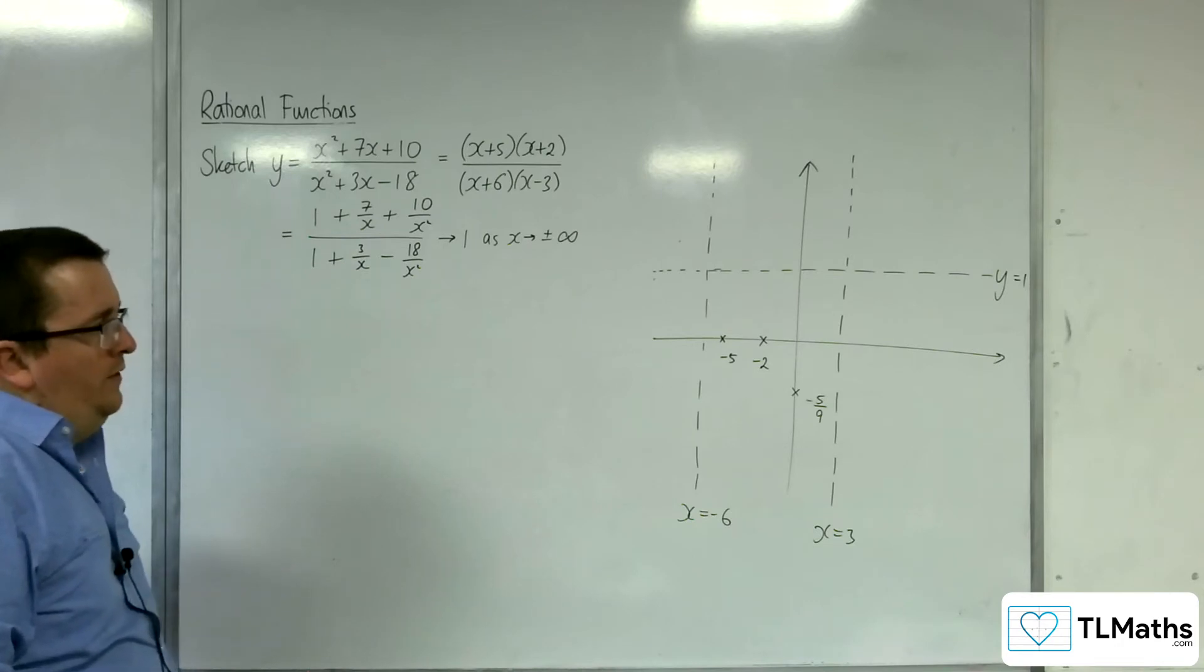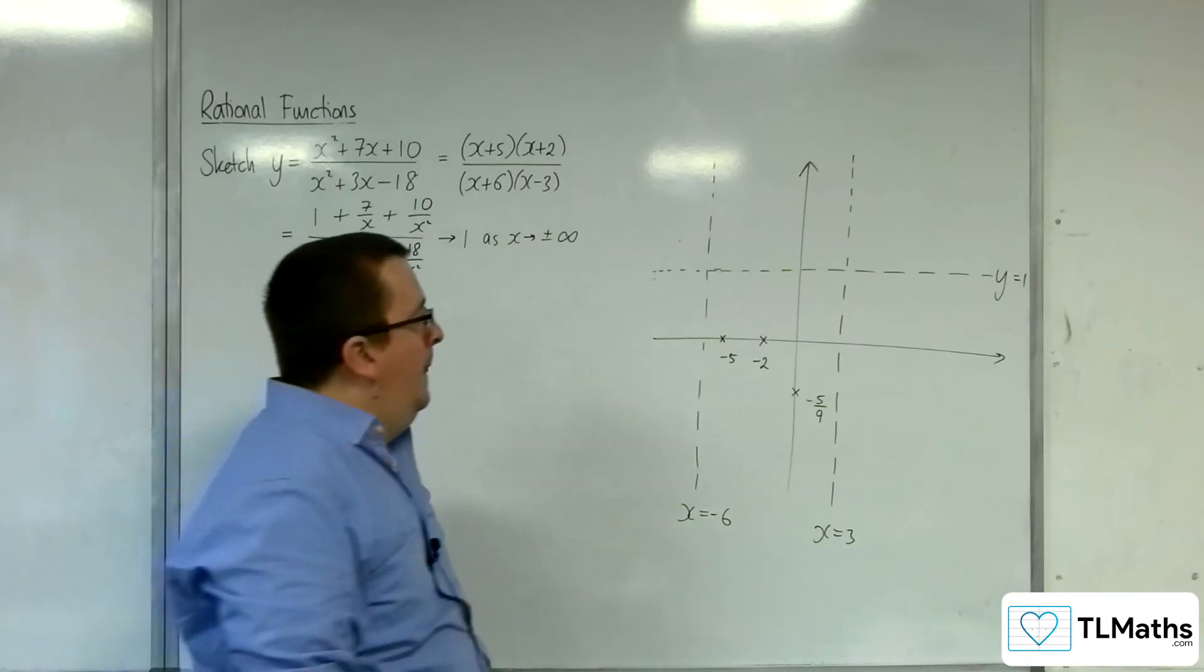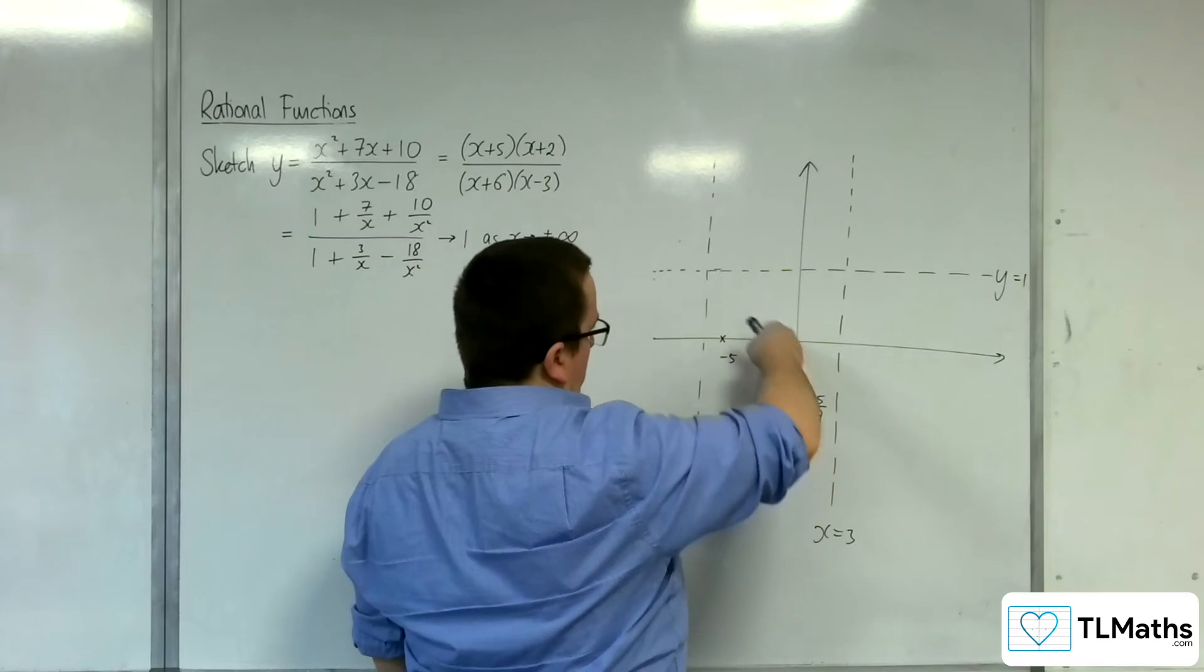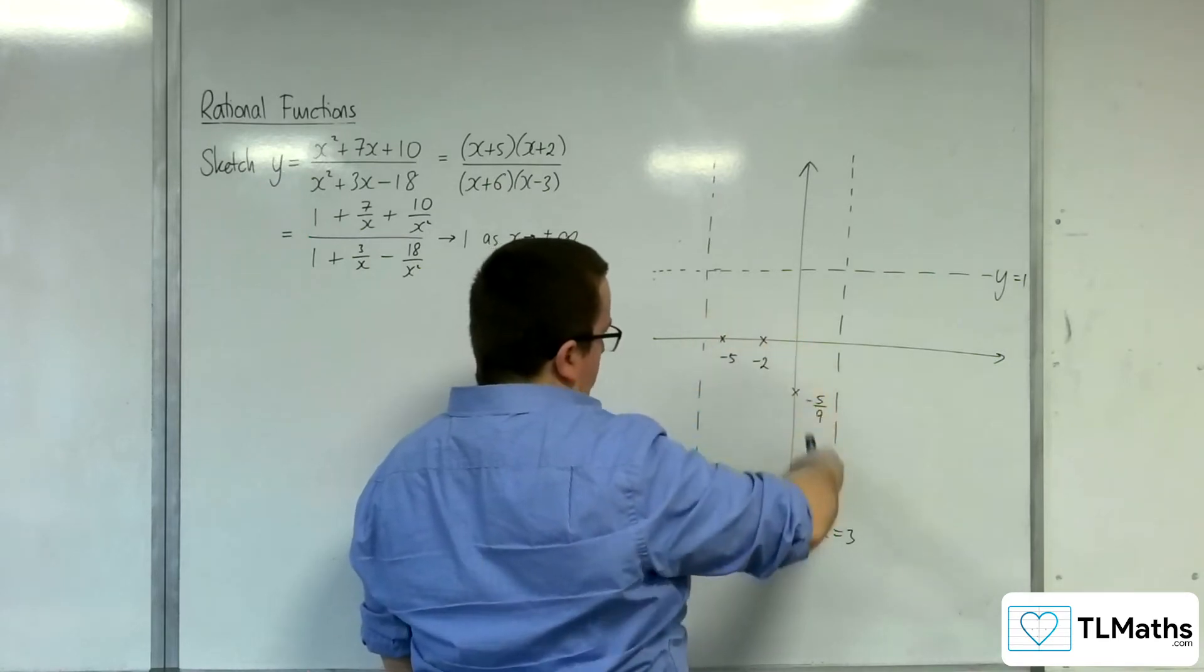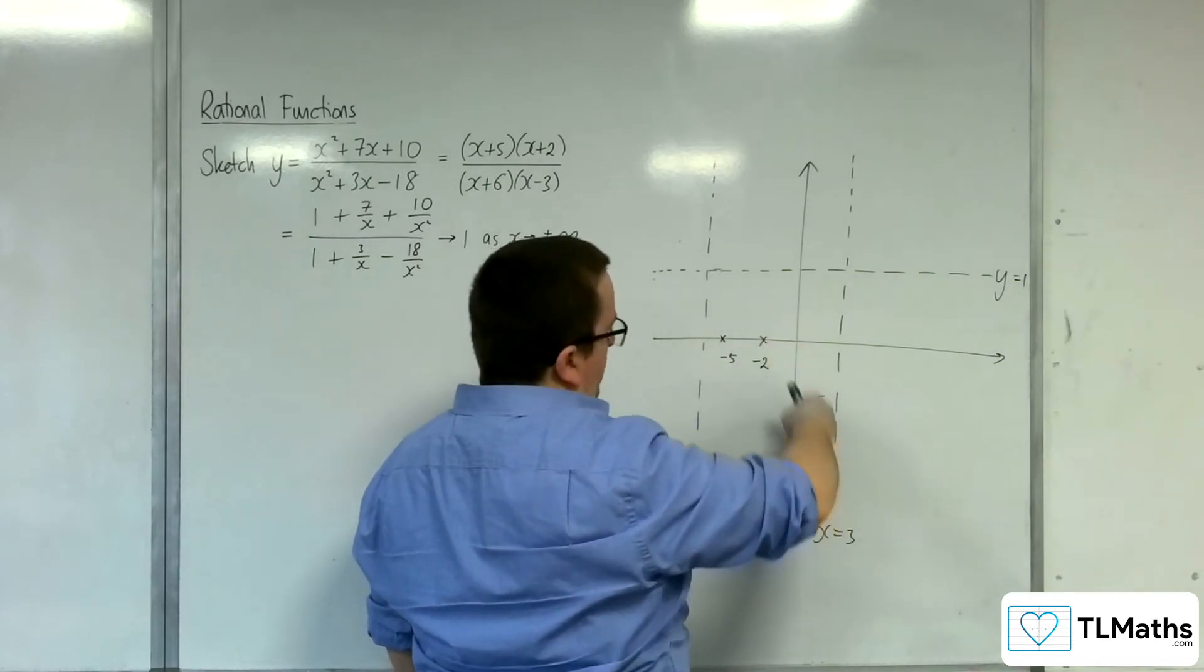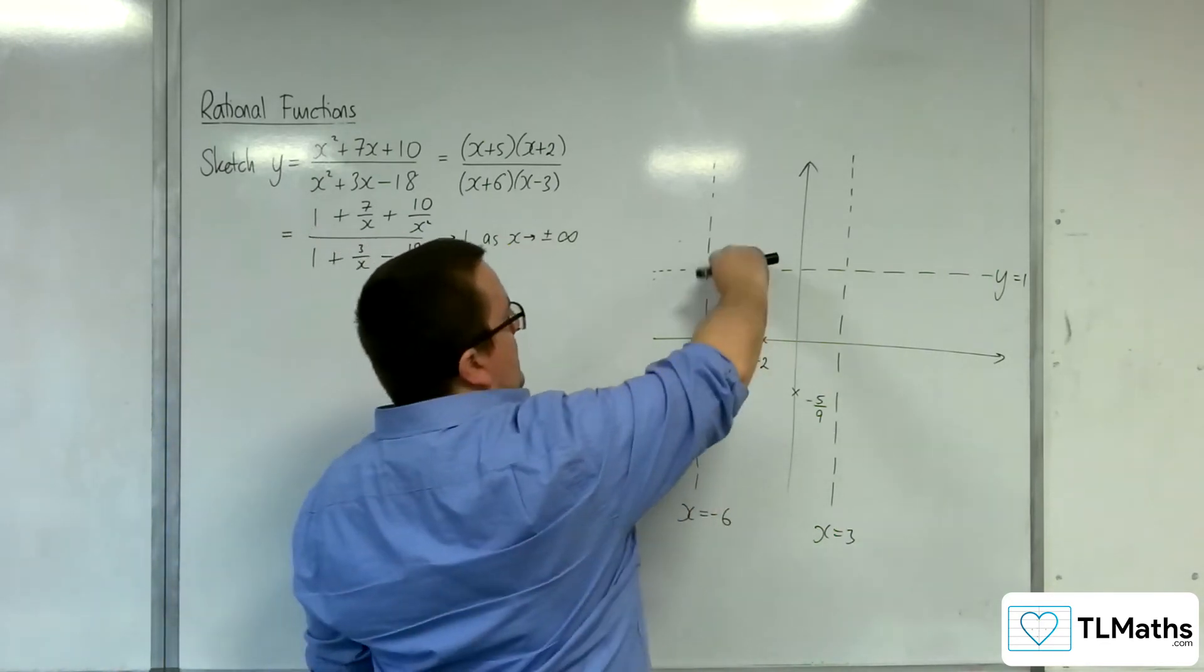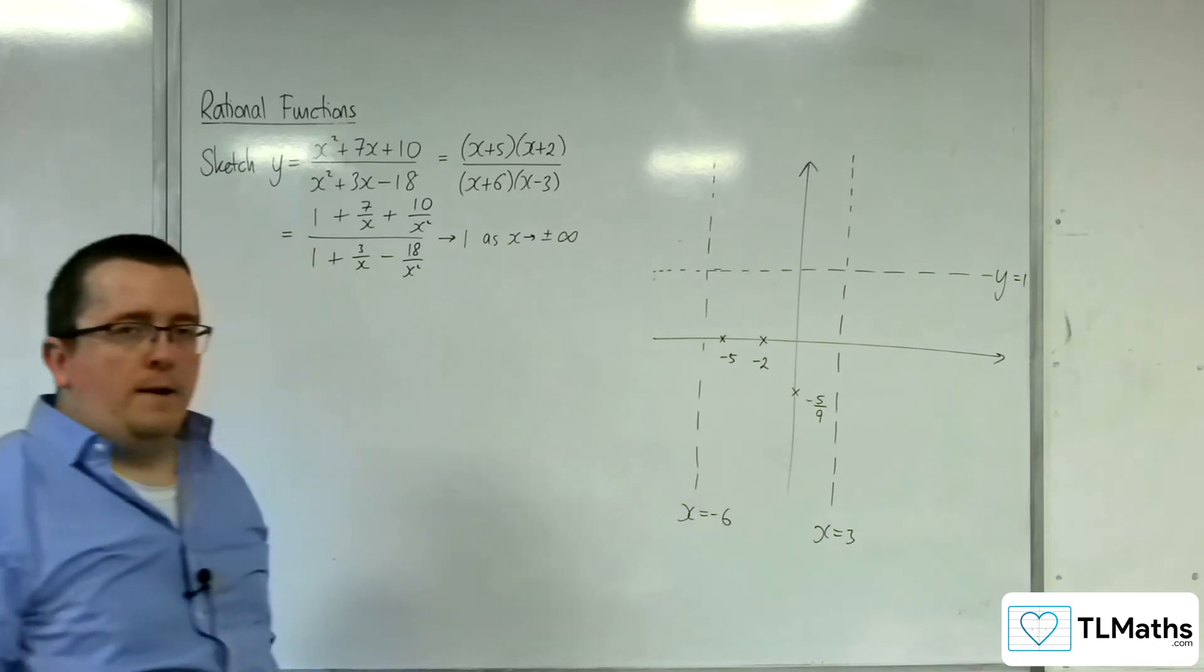So one thing that we would need to be careful on is we can see that our sketch probably has to do something like this. In order to go through those three points. Now, does it go up high enough in order to cross through y equals 1?